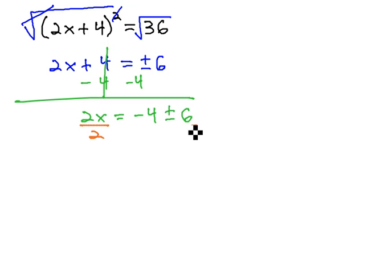Finally, to get the x alone, we'll divide both sides by 2, and that gives us x equals negative 4 plus or minus 6 over 2.